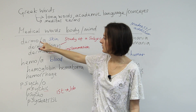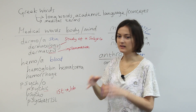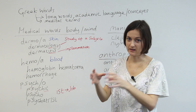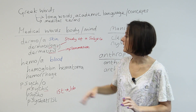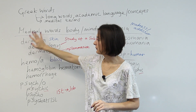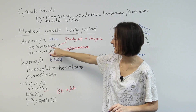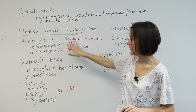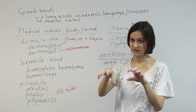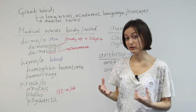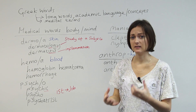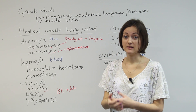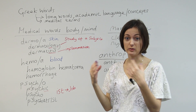When we find a word with 'dermo' or 'derma' in it, we need to think of this part of the word as a building block. You put different building blocks together — otherwise known as a root — and that can help you understand the whole meaning of the word. 'Dermo' means skin, and '-ology' means the study of a subject. So if you have a problem with your skin and need to go to hospital, you would go to the dermatology department and the doctor would be a dermatologist — a specialist who knows about skin problems.